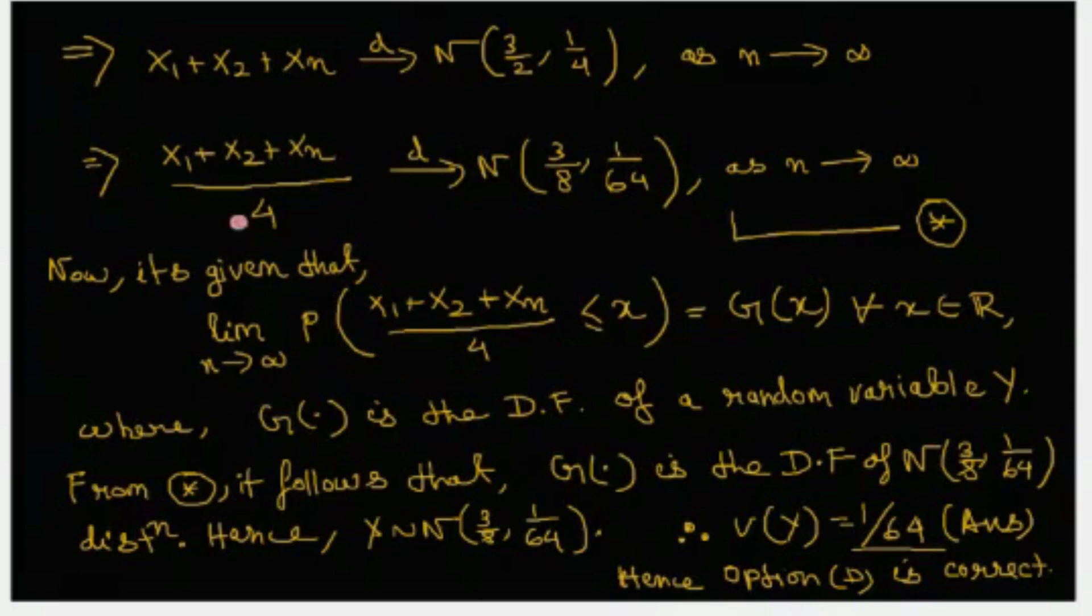This means that as n tends to infinity, it follows that g should be the distribution function of normal 3/8, 1/64 distribution.